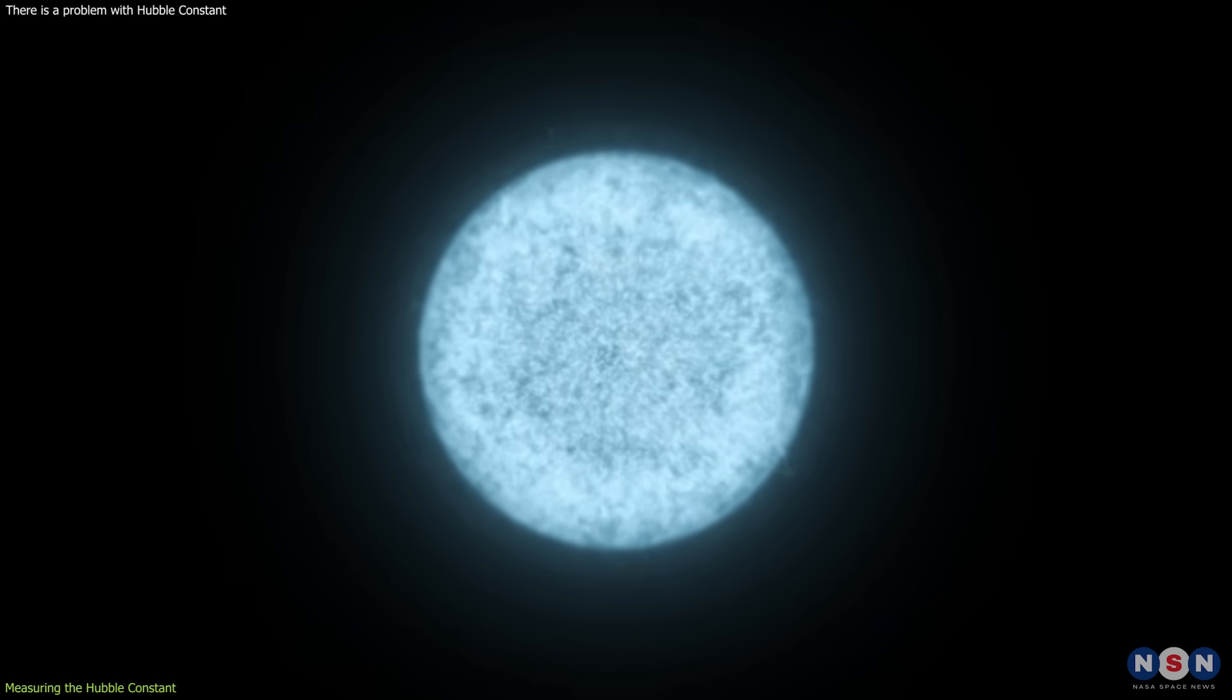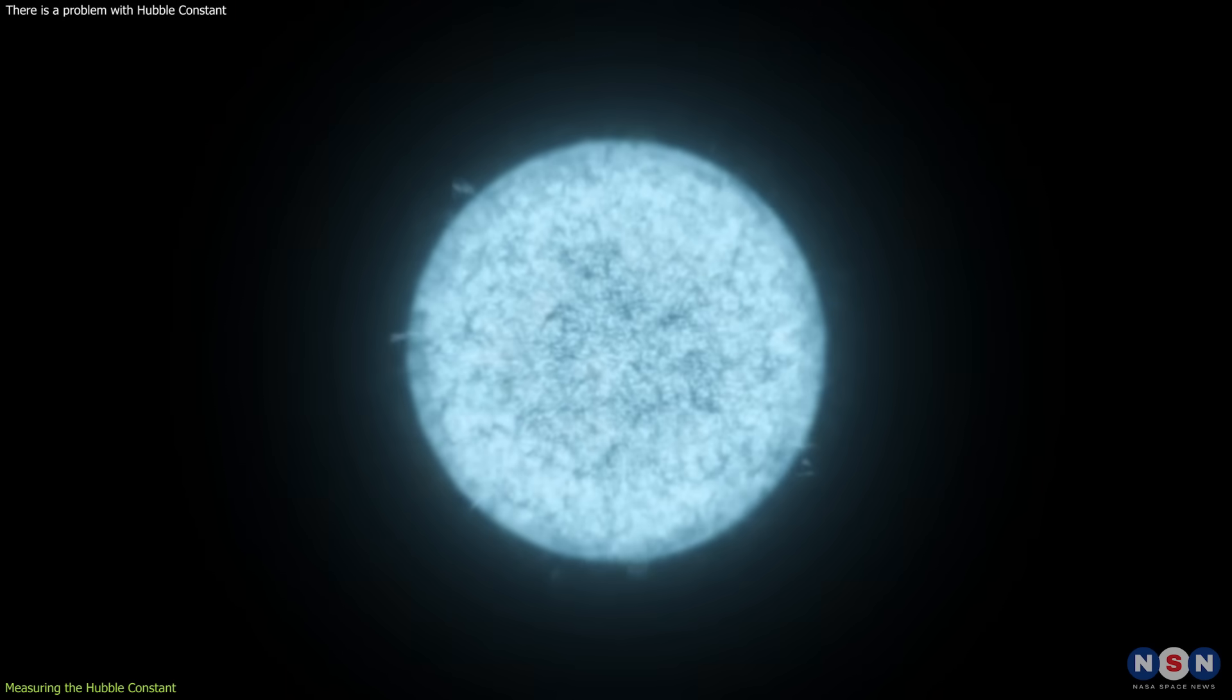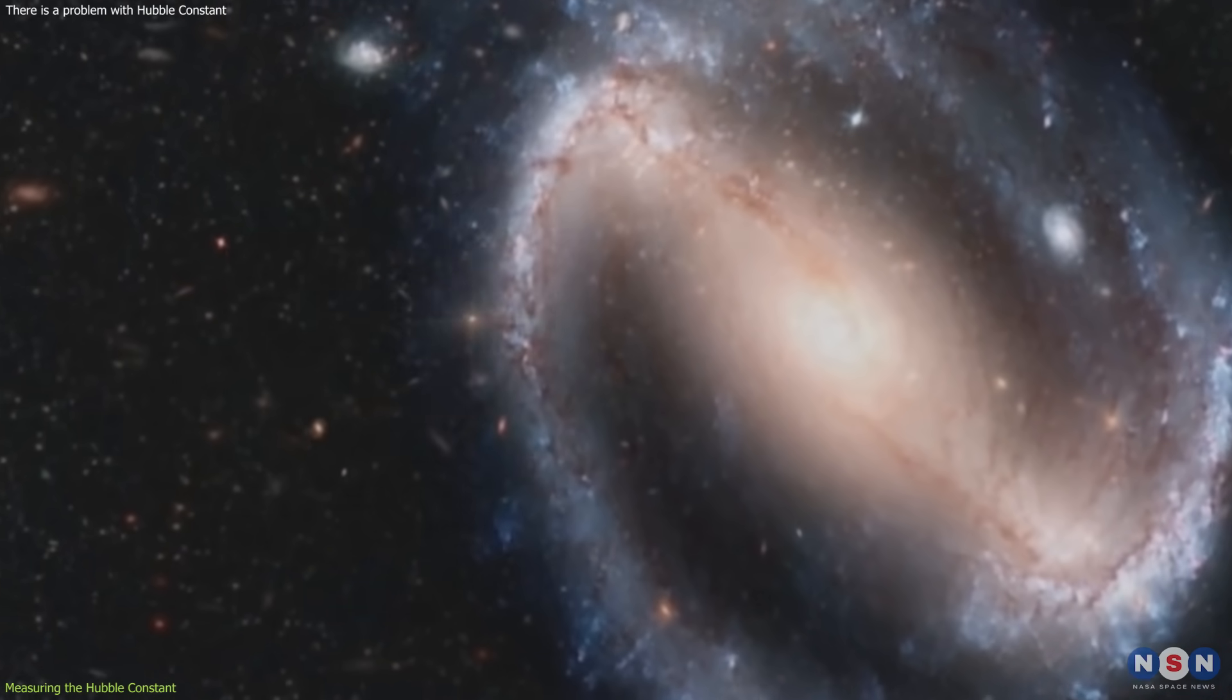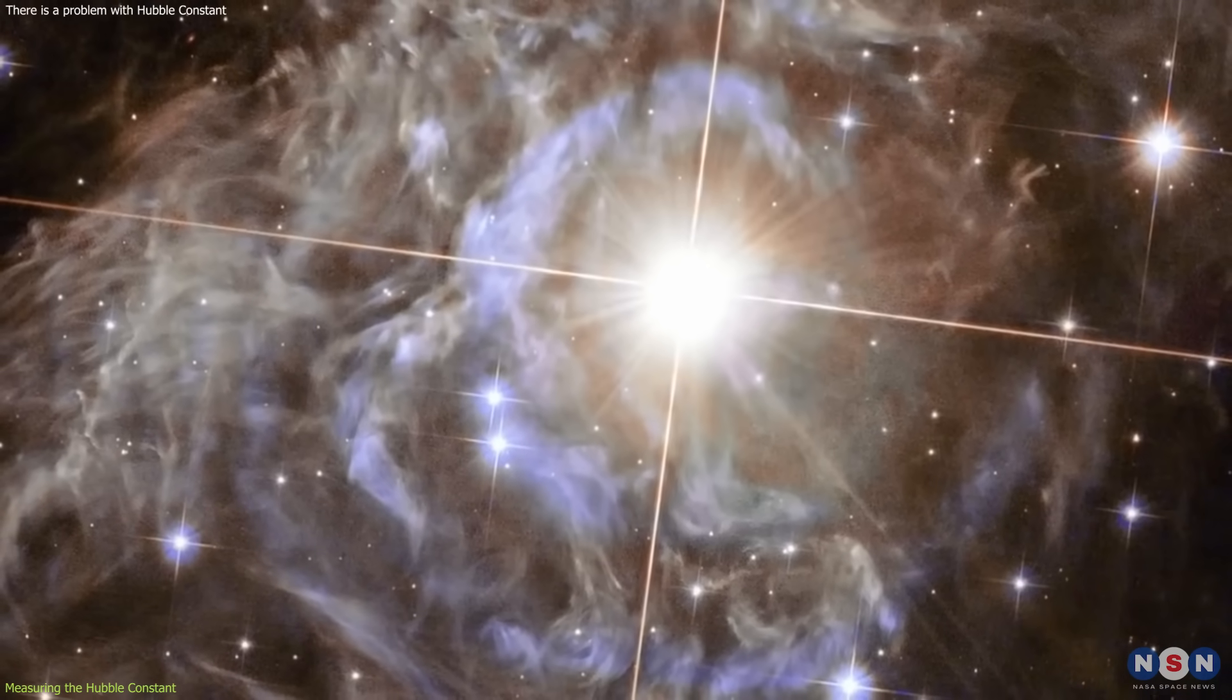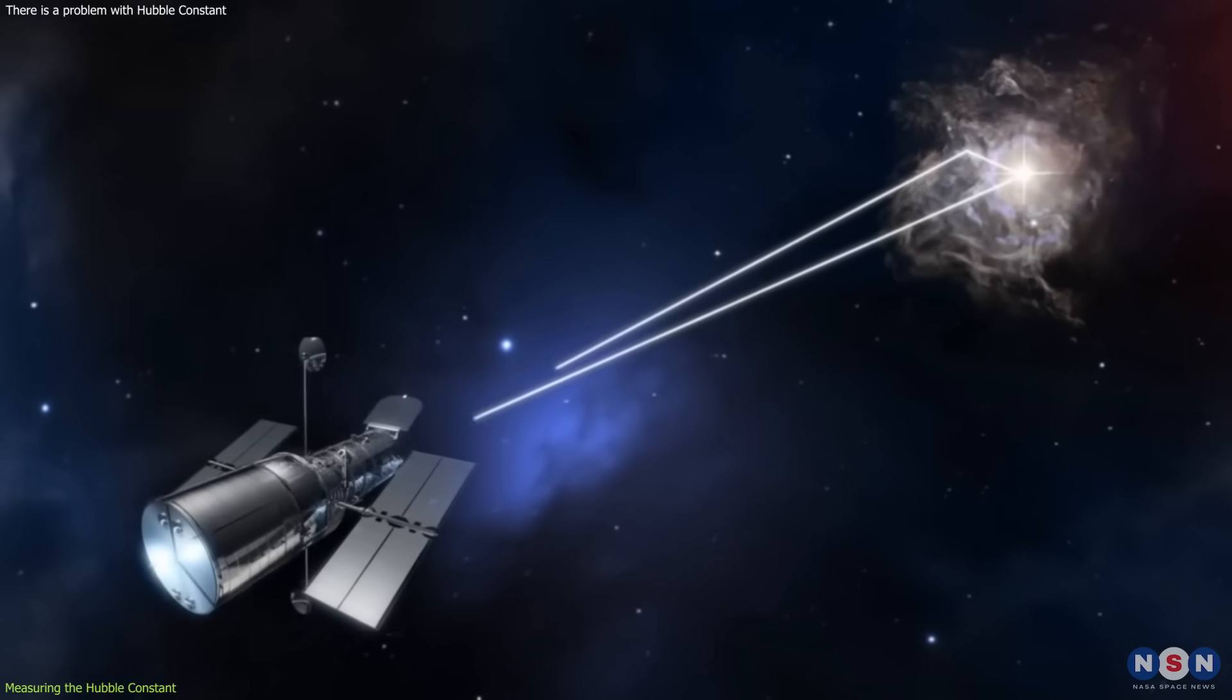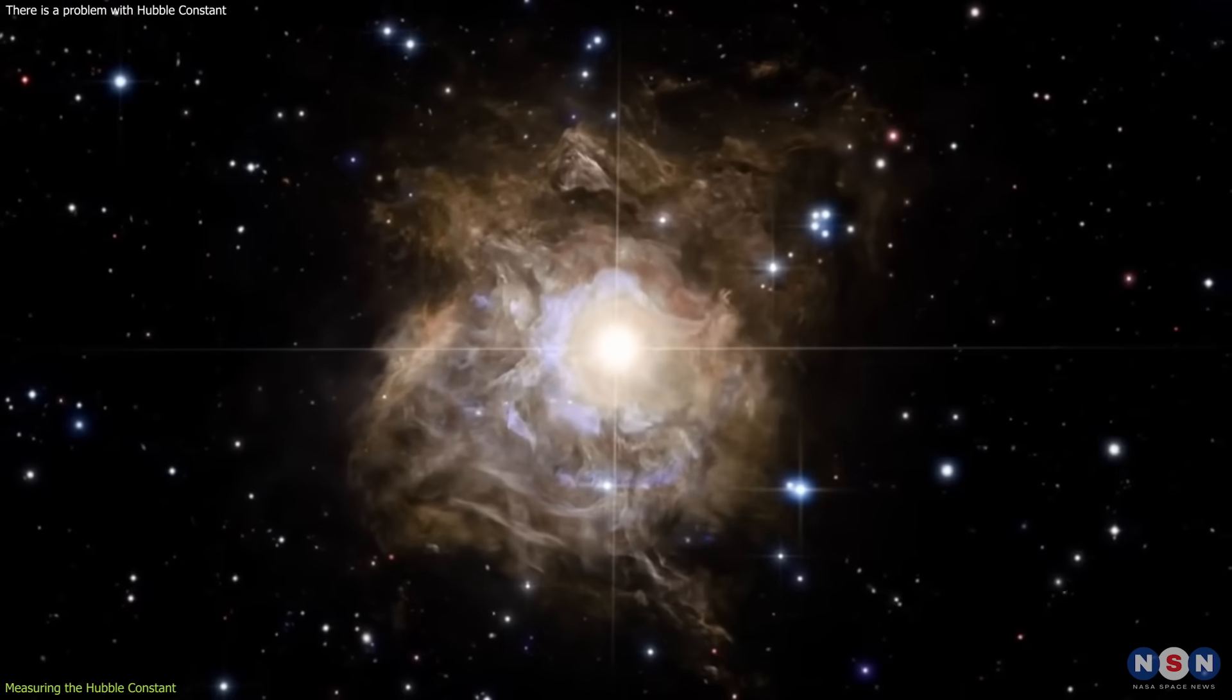One of these standard candles are Cepheid variable stars, which are stars that pulsate with a regular period that depends on their brightness. The longer the period, the brighter the star. By measuring the period and the apparent brightness of a Cepheid, we can calculate its distance.